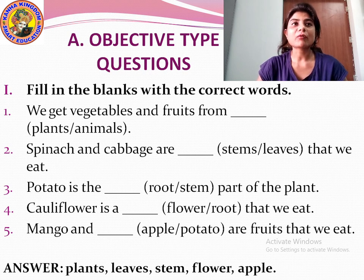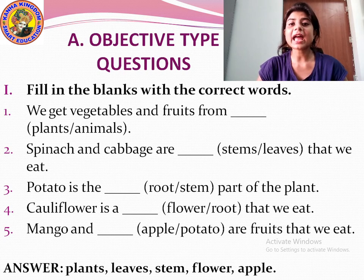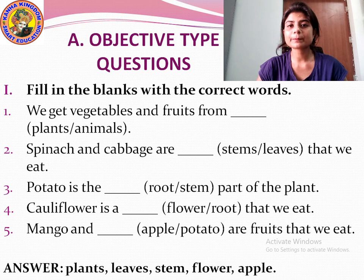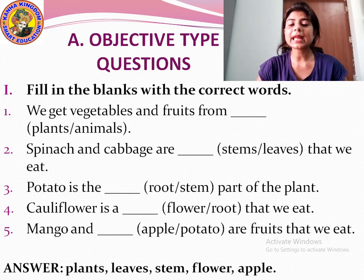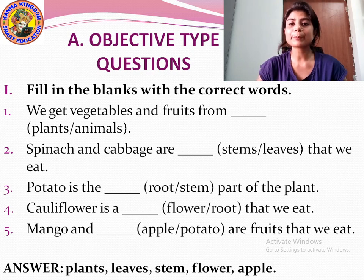Question number one: We get vegetables and fruits from dash — plants or animals. The answer is plants. We get vegetables and fruits from plants.